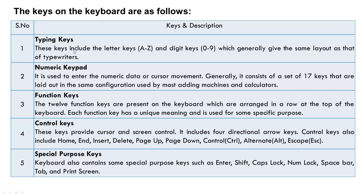Typing keys include all alphabets A to Z and digits 0 to 9. The numeric keypad is on the right side with around 17 keys (digits 1-9, addition, subtraction, multiplication, enter, etc.). Function keys are F1 through F12 — 12 function keys in total, each fixed with predefined functions. Control keys are used to control the cursor movement — examples include Home, End, Insert, Delete, Page Up, Page Down, Control, Alternate, and Escape.